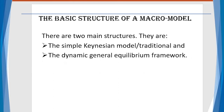Before going further, let's discuss the basic structure of a macroeconomic model. In general, there are two main structures: the single Keynesian model, or the traditional model; and the second one is the dynamic general equilibrium framework. Let's look at each of these one after the other.